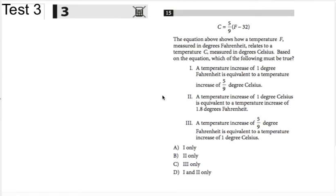So, notice that must be true, right? A temperature increase of one degree in Fahrenheit is equivalent to a temperature increase of five-ninths degrees Celsius. Okay, so let's rock through this. A temperature increase of one degree Celsius is equivalent to a temperature increase of 1.8 degrees Fahrenheit. A temperature increase of five-ninths degree Fahrenheit is equal to a temperature increase of one degree Celsius.